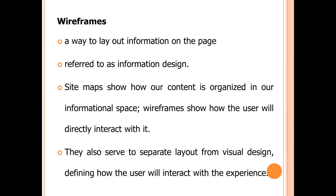The fourth characteristic is wireframes. This is the layout of the information on the page — how you are presenting the information on the web page, also referred to as information design. The main difference between a wireframe and a site map is that a site map tells you how the content is organized in your application, whereas a wireframe tells you how the user is going to interact with it.